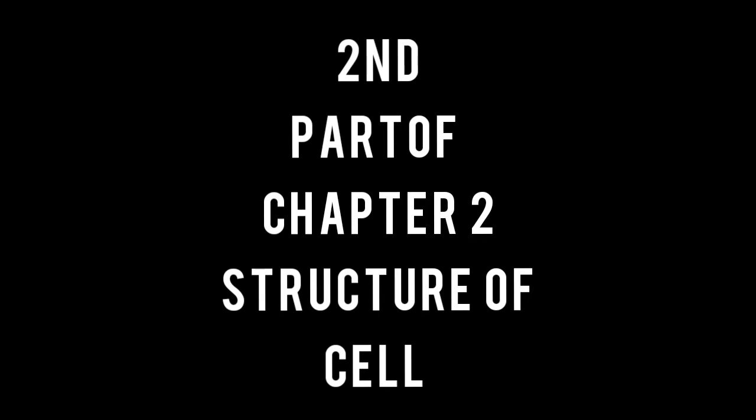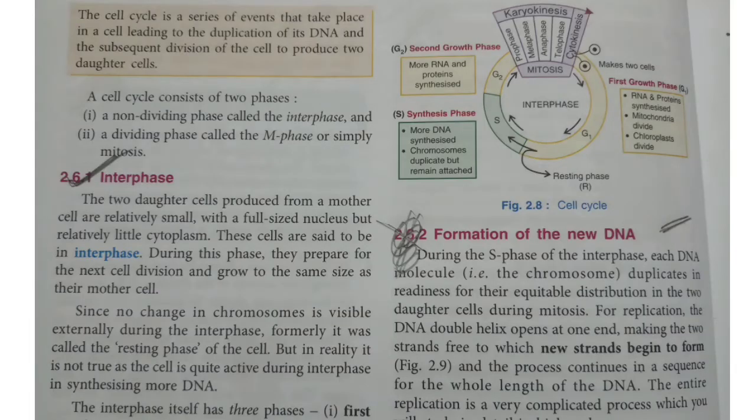Second part of Chapter 2: Structure of Cell. The Cell Cycle. The cell cycle is a series of events that take place in a cell leading to the duplication of its DNA and the subsequent division of the cell to produce two daughter cells.